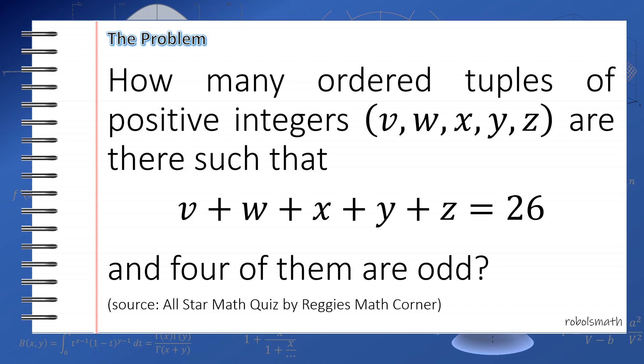Going back to the problem, we cannot use stars and bars for this problem straightforwardly because we do not meet the condition of getting non-negative integer solutions. In fact, we're looking for only positive integer solutions and four of the solutions to be odd. So for this problem, we will use some techniques.